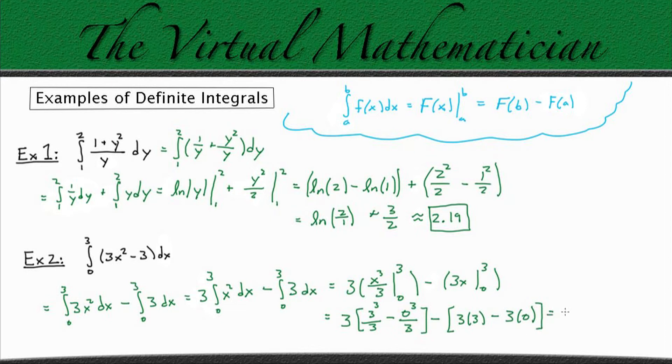This is going to give us 27 minus 9 which is going to simplify to 18. And that's going to be the final answer for example number 2.